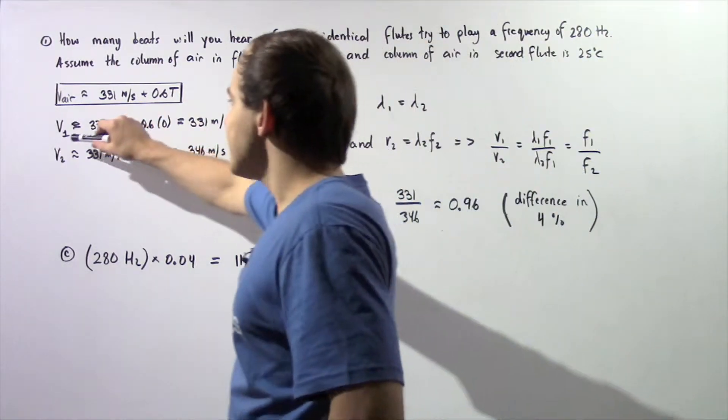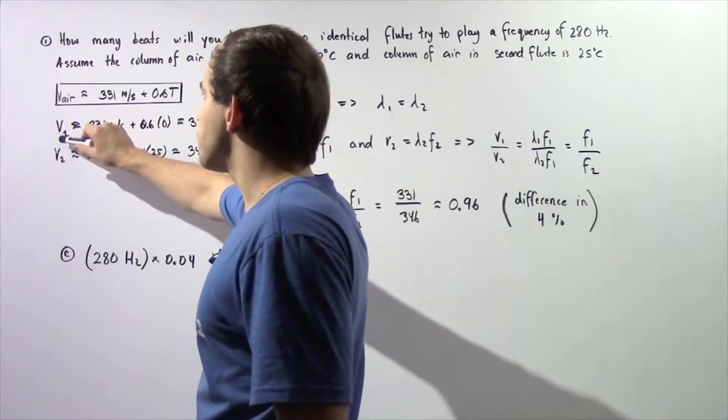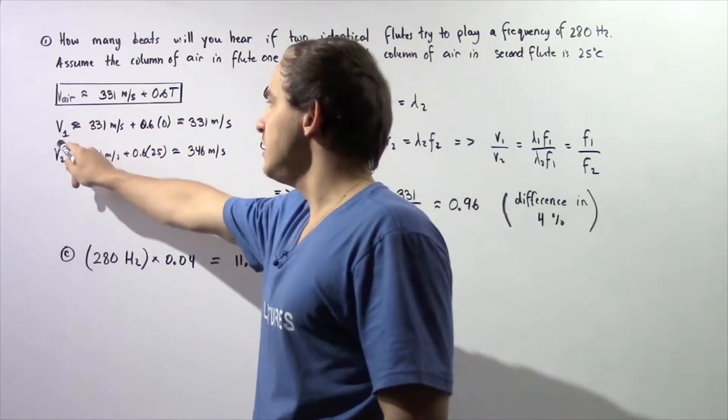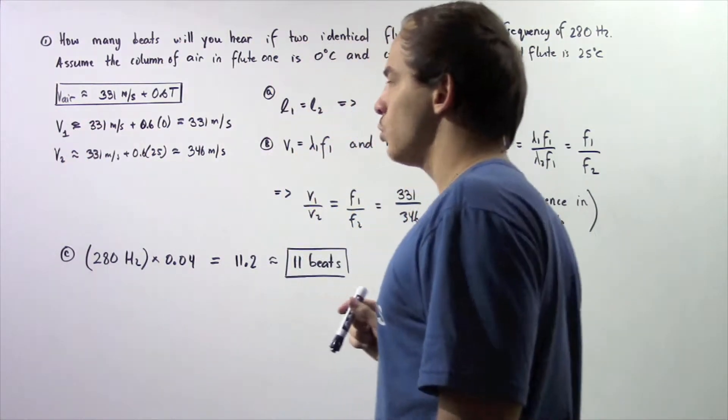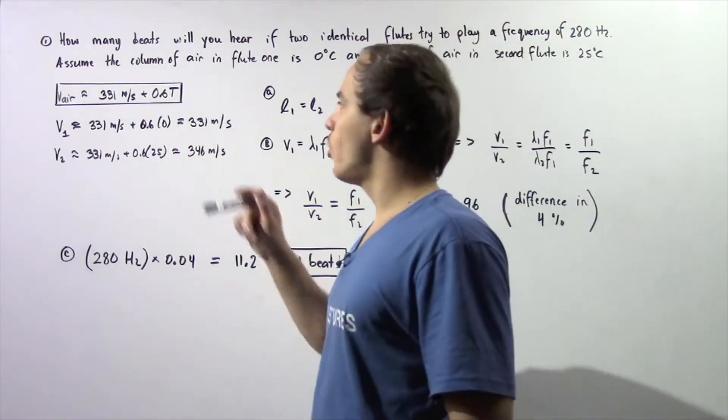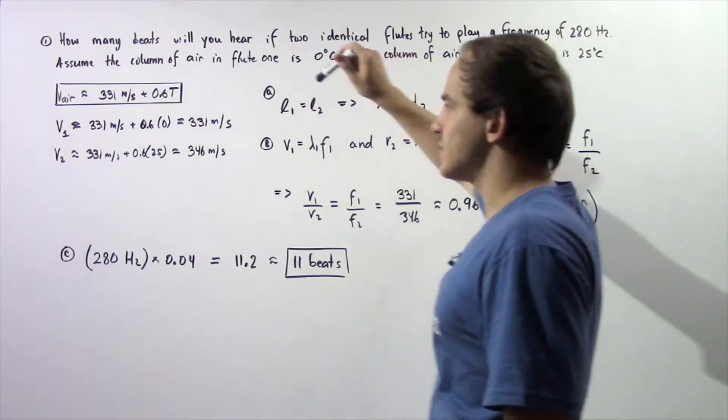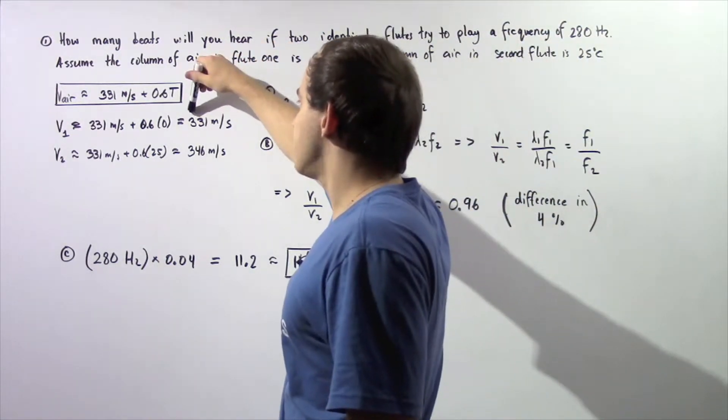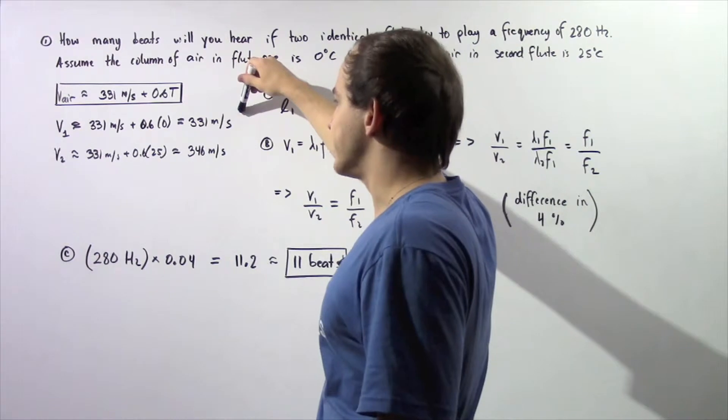So the velocity of the standing wave that is produced in flute one, V1, is approximately equal to 331 meters per second plus 0.6 times zero degrees Celsius. So we get a velocity of 331 meters per second.